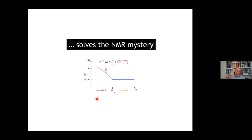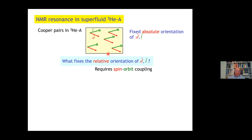This now solves the NMR mystery. In helium-3A, all Cooper pairs, the orbital space and spin space arrows, are fixed. But the relative orientation is not fixed. What fixes the relative orientation? This is in orbital space, this is in spin space, so it must be a spin-orbit coupling.